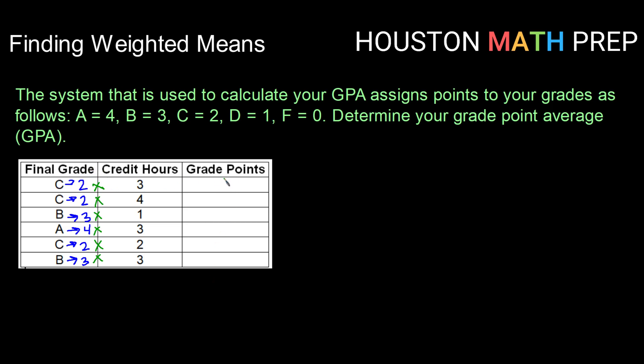So 2 times 3 gives me 6, 2 times 4 gives me 8, 3 times 1 gives me 3, 4 times 3 gives me 12, 2 times 2 gives me 4, and 3 times 3 gives me 9. So now I have all of my grade points, and I simply need to take the average of these numbers.